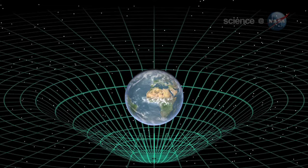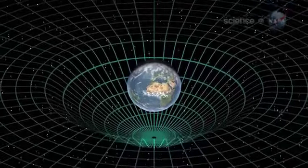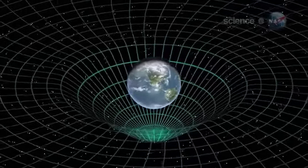If Earth were stationary, that would be the end of the story. But our planet spins, and the spin should pull the dimple around in a four-dimensional swirl.